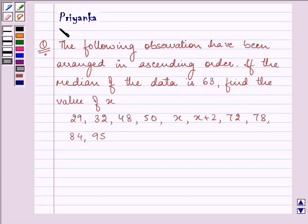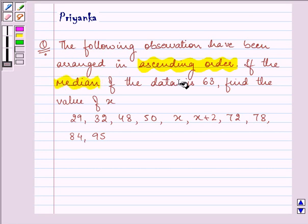Hello and how are you all? Today my name is Priyanka. The question to be discussed here is: the following observations have been arranged in ascending order. If the median of the data is 63, find the value of x.